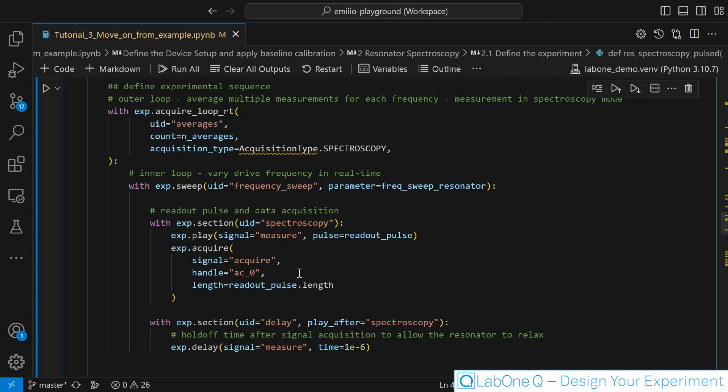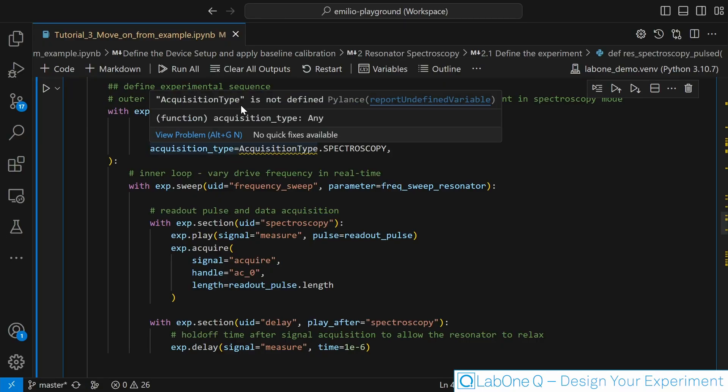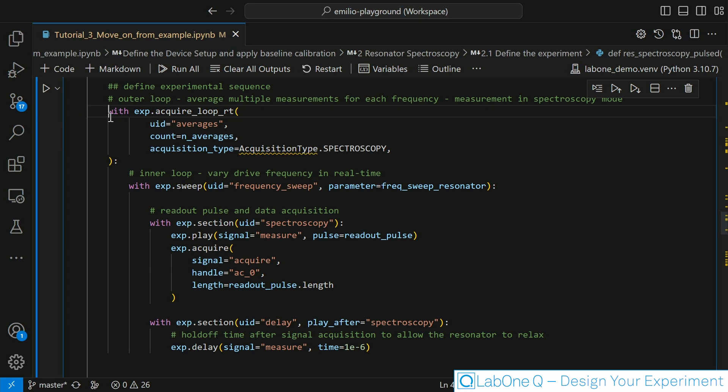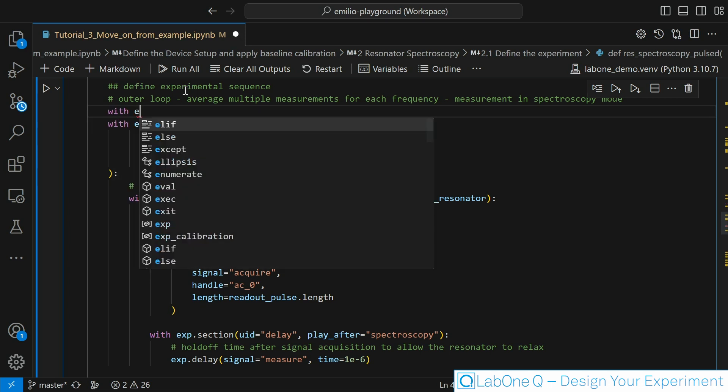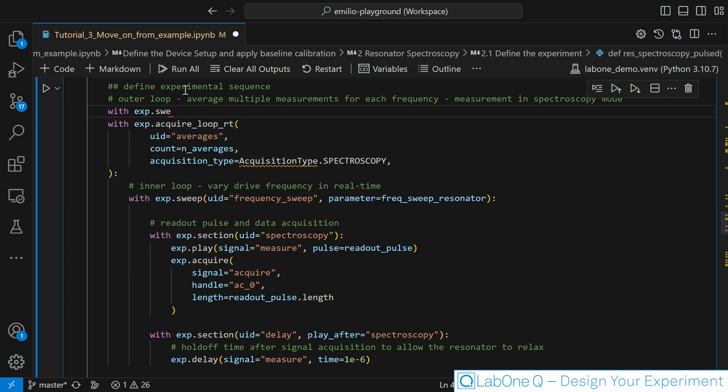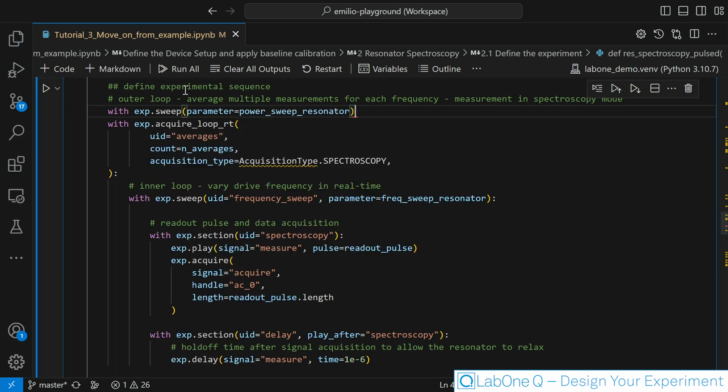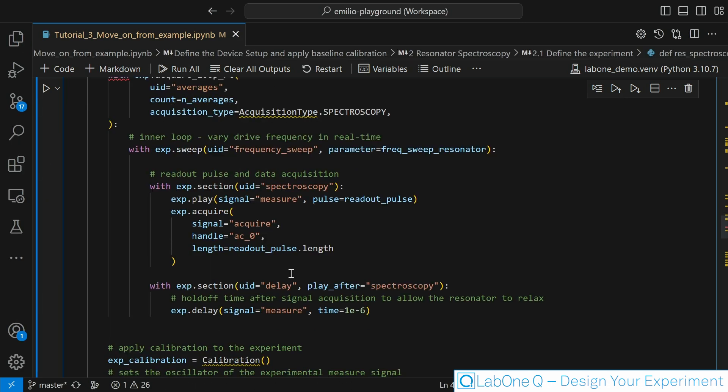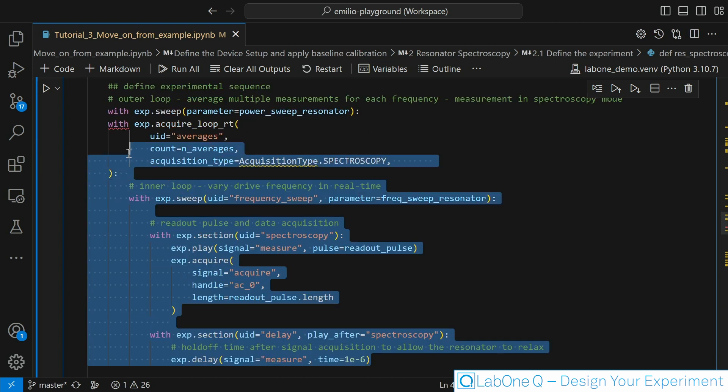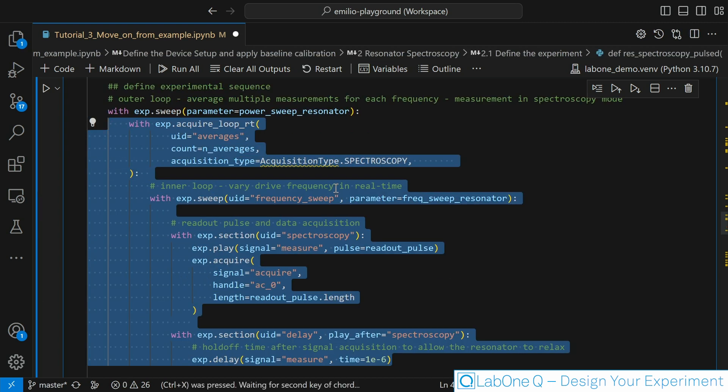Since we are adding one more sweep we need to add one more sweep instruction to our experiment. So we go back to our experiment description and let's just add one more sweep here. It's not very important to give a UID in this case, so let's just pass this parameter our power sweep resonator. As we are in Python we have to make sure that everything is of course properly indented. So let's do that.